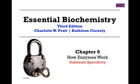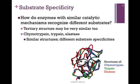In our next lesson on how enzymes work from Chapter 6, we want to consider substrate specificity. In other words, how do enzymes with similar catalytic mechanisms that catalyze the same type of chemical reaction recognize different substrates?